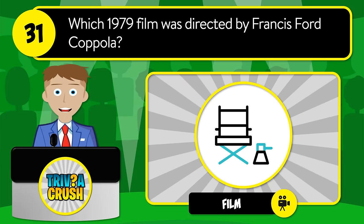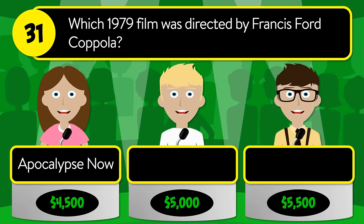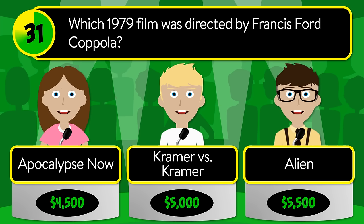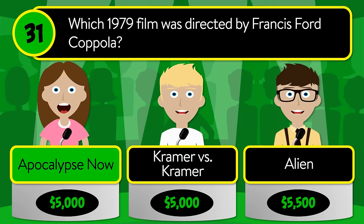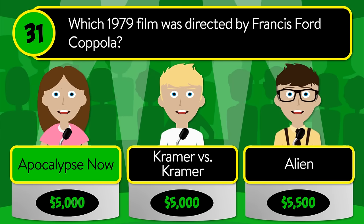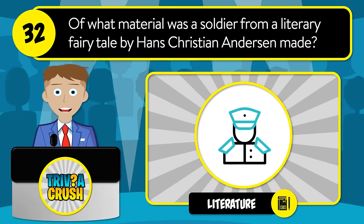Question number thirty-one: which 1979 film was directed by Francis Ford Coppola? Was it Apocalypse Now, Kramer vs. Kramer, or Alien? The correct answer is Apocalypse Now.